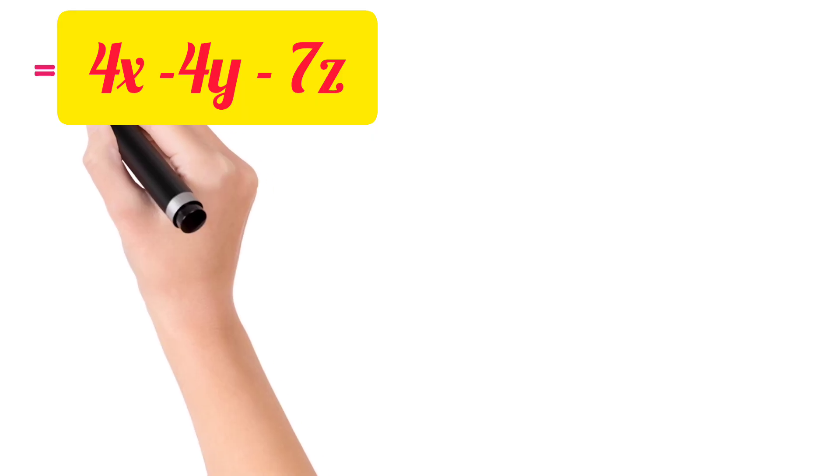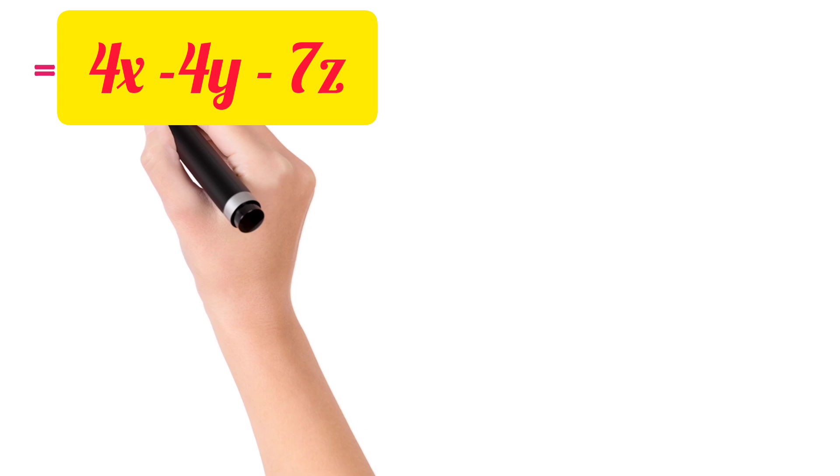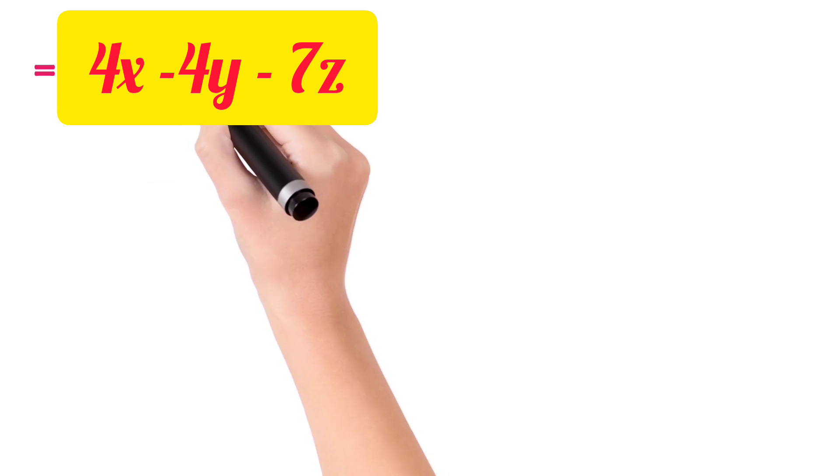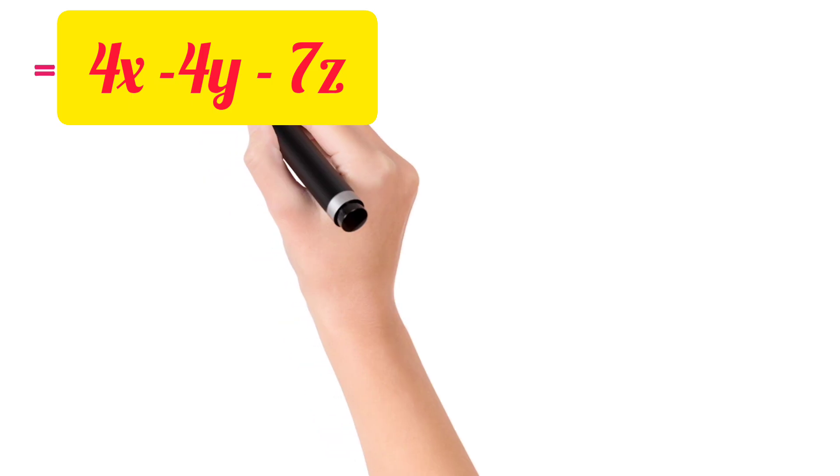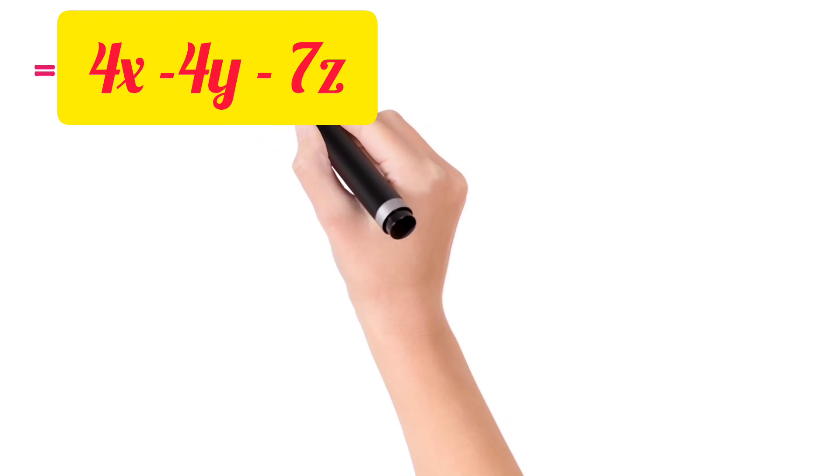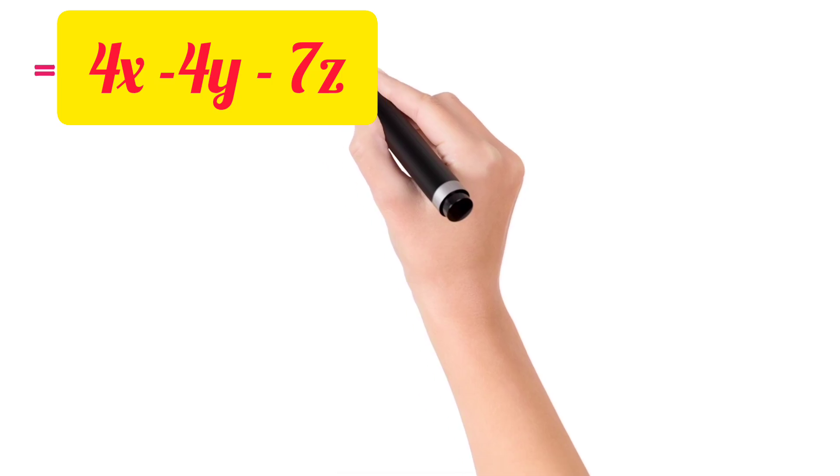Now see, 6X minus 2X equals 4X. Now minus 5Y plus Y equals minus 4Y. And plus 4Z minus 11Z will come minus 7Z, because minus sign is with bigger number. So this is our answer.